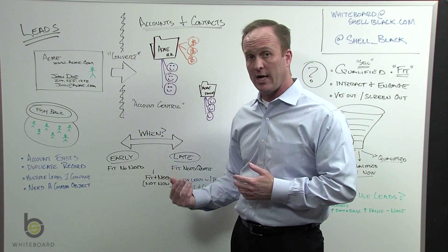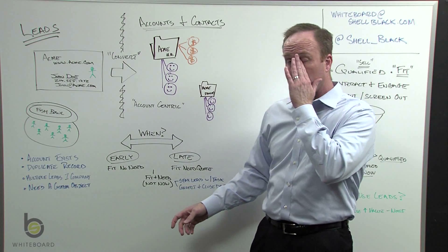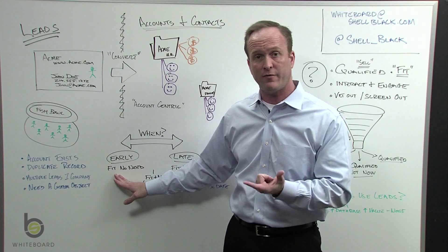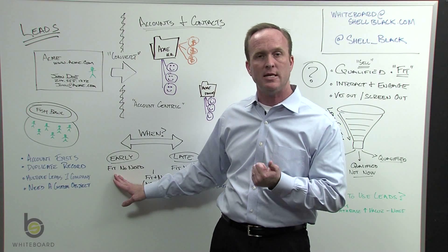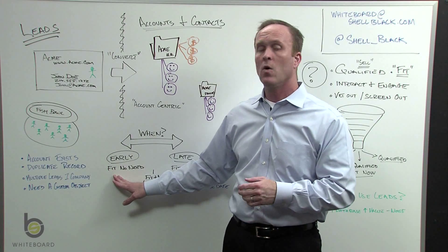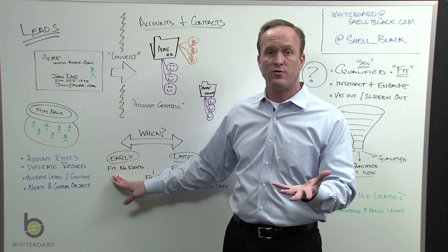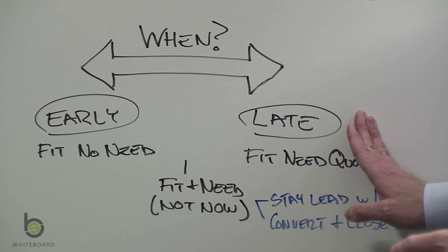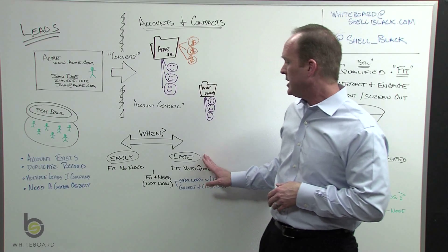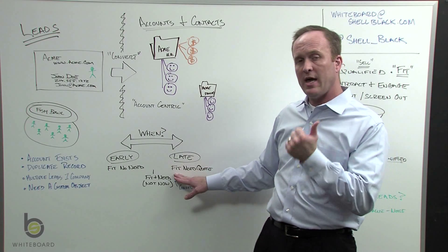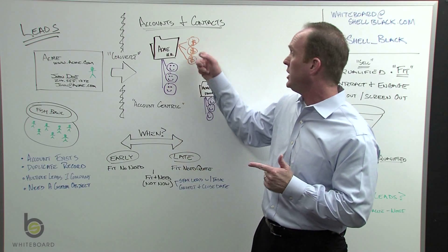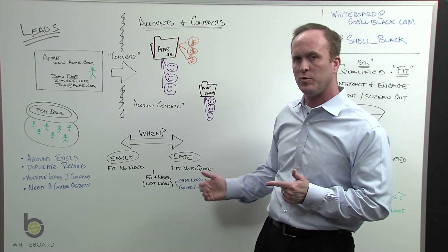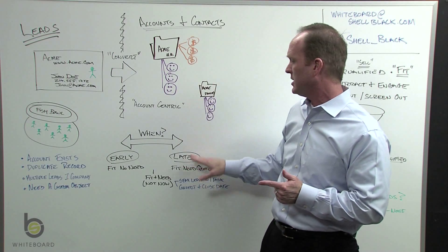An early conversion would be when you find the lead is a fit for what you do, but there may not be an immediate need — they may not be ready to buy today, but they consume your products and services. A late conversion is when you do a lot of pre-selling in the lead bucket before jumping to contacts and opportunities. Late conversion means not only do they have fit, but they have an immediate need, they need a quote, they want to buy right now.